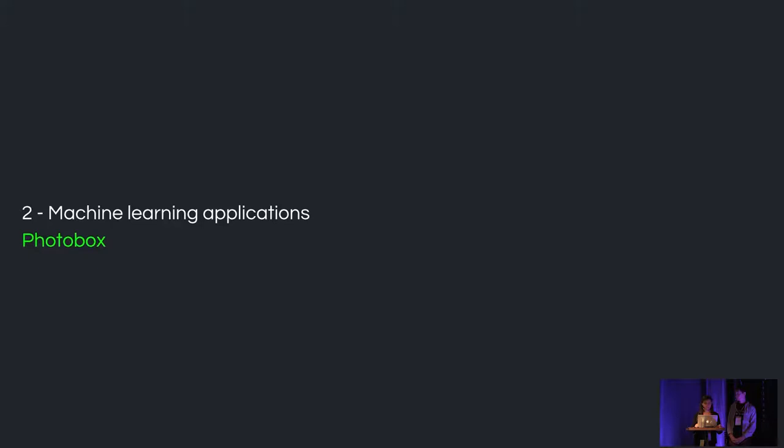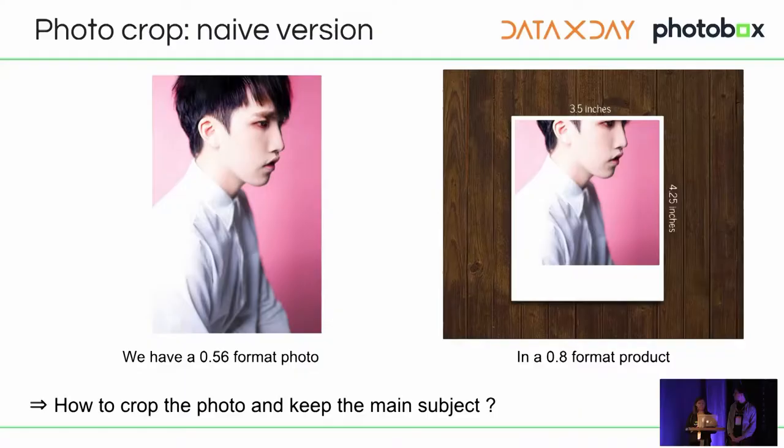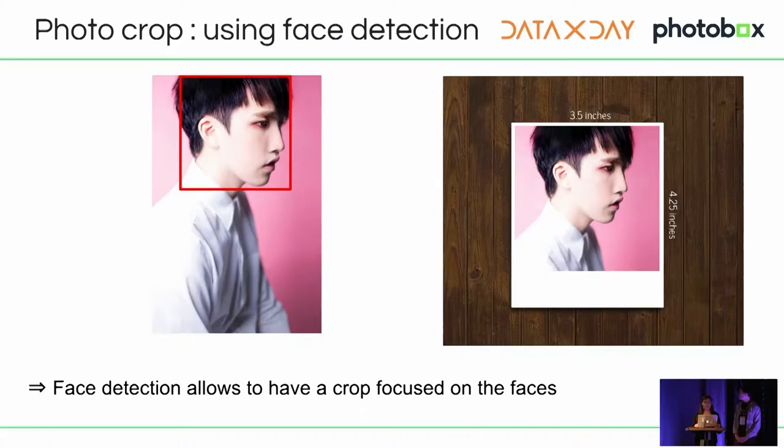Machine learning is really important for Photobox for its current and future products. One of the first applications is photo cropping. If we use a straightforward cropping method, we may lose important information such as the subject of the photo. Therefore we want to retain the most important information — the subject — and discard peripheral information. We need this to adapt to specific product formats. By analyzing user cropping behavior, we found that users usually keep faces in their photos, so we have included a face detector in our algorithm and are able to provide a more intelligent smart crop.